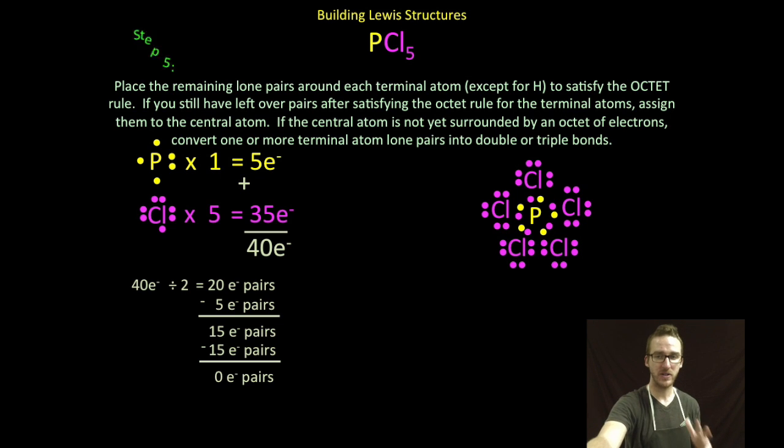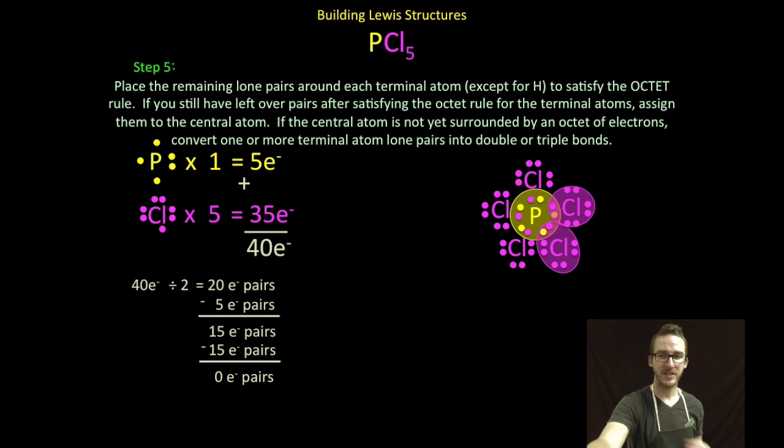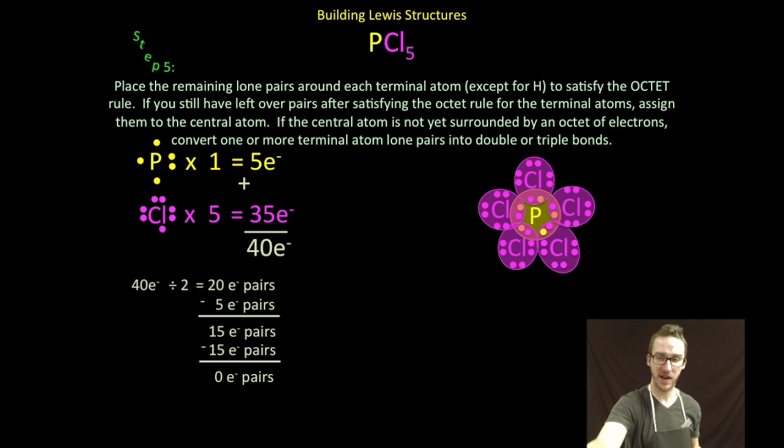Now, as I stop to think about my final Lewis structure, I'm starting to panic. I'm sweating a little bit because as I look at this, I see that my phosphorus atom has a total of 10 electrons or five pairs.